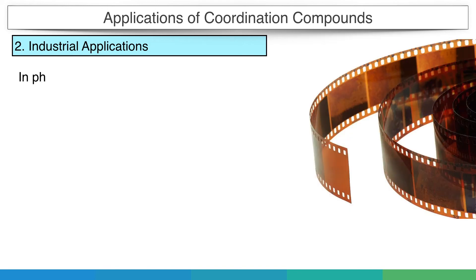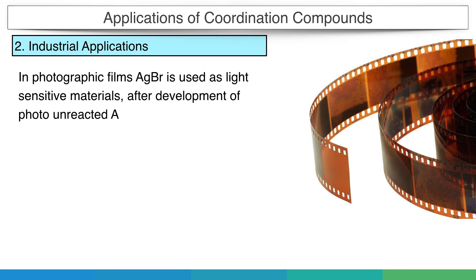In photographic films, silver bromide is used as a light-sensitive material. After development of the photo, unreacted silver bromide is removed by forming silver thiosulfate complex.